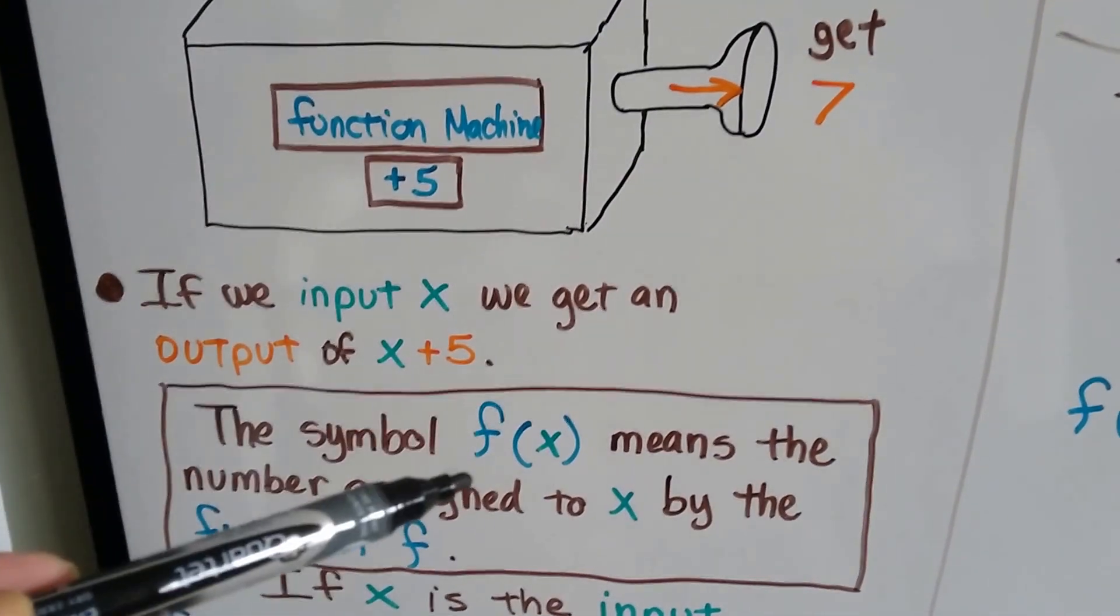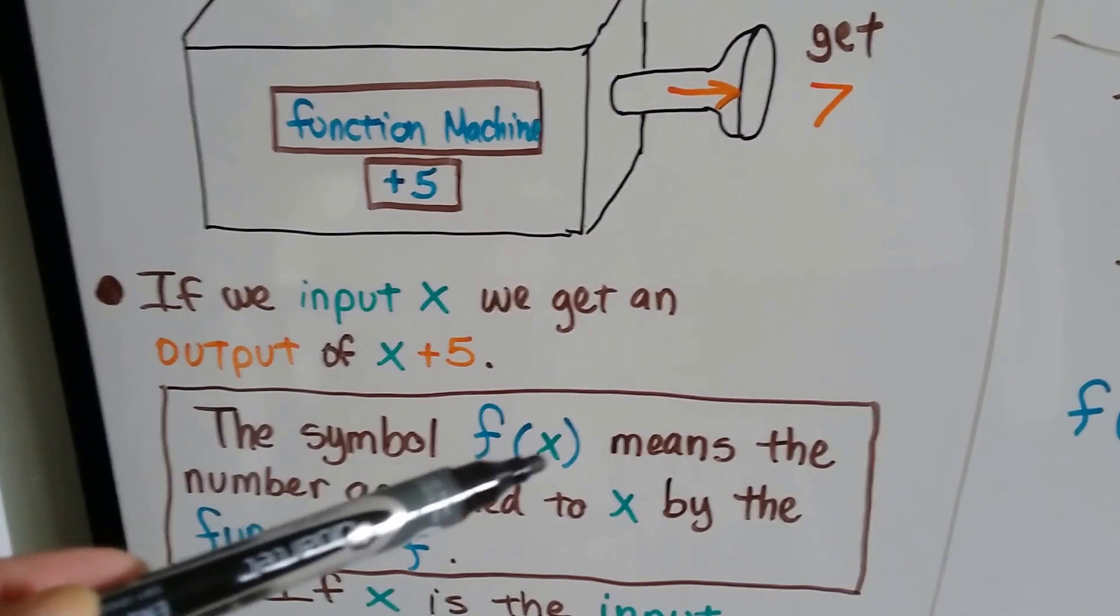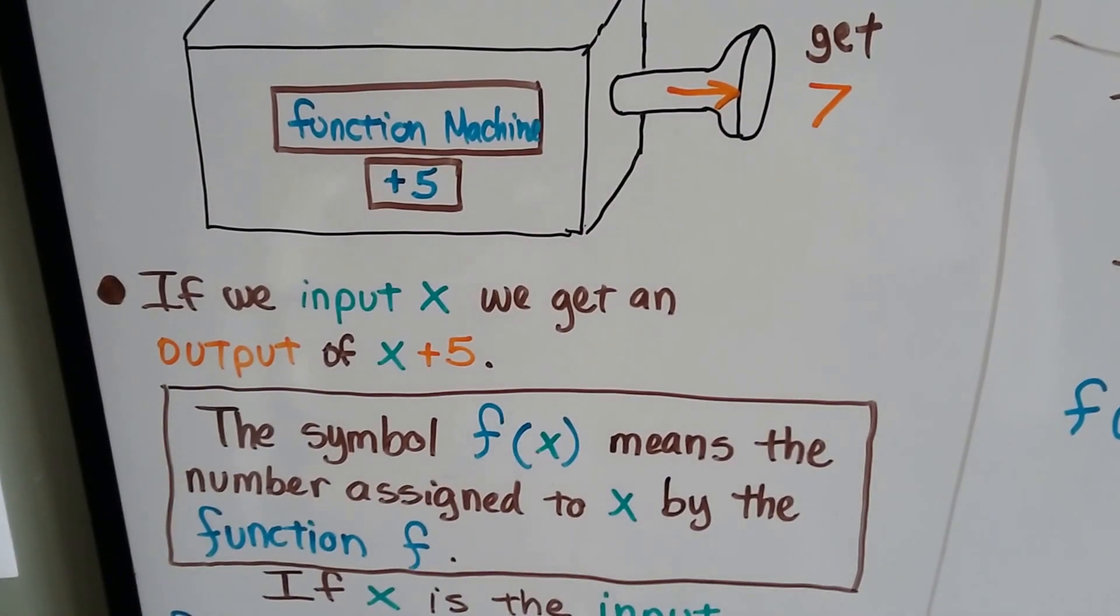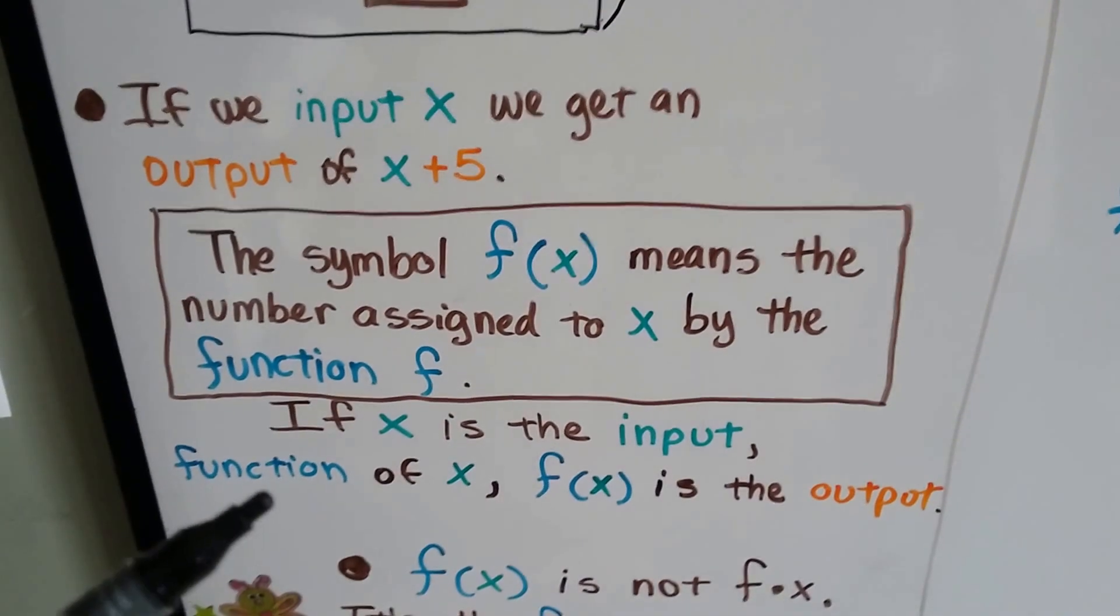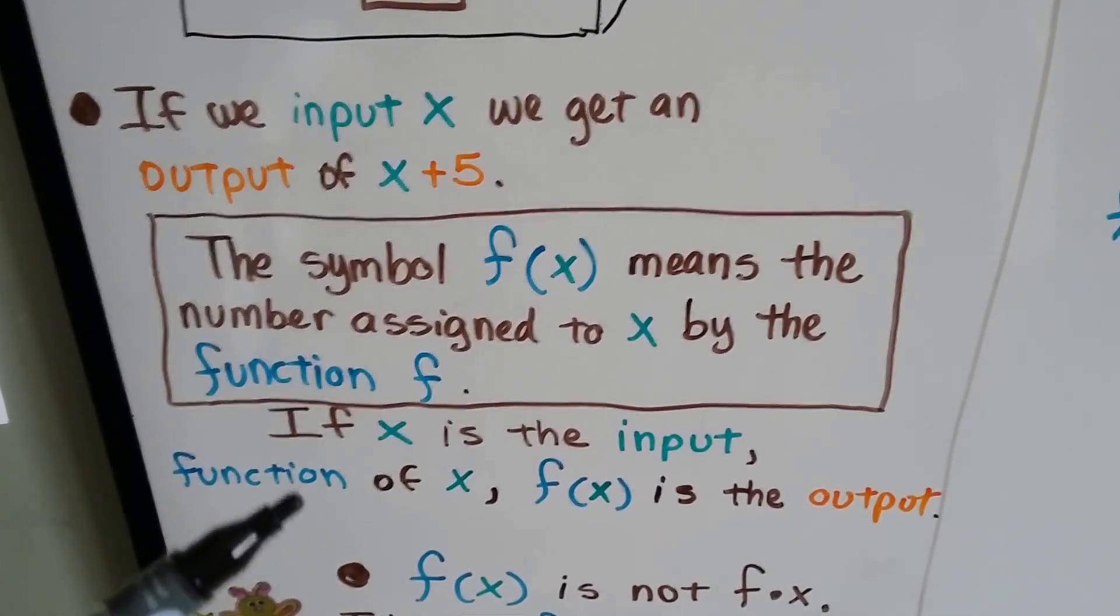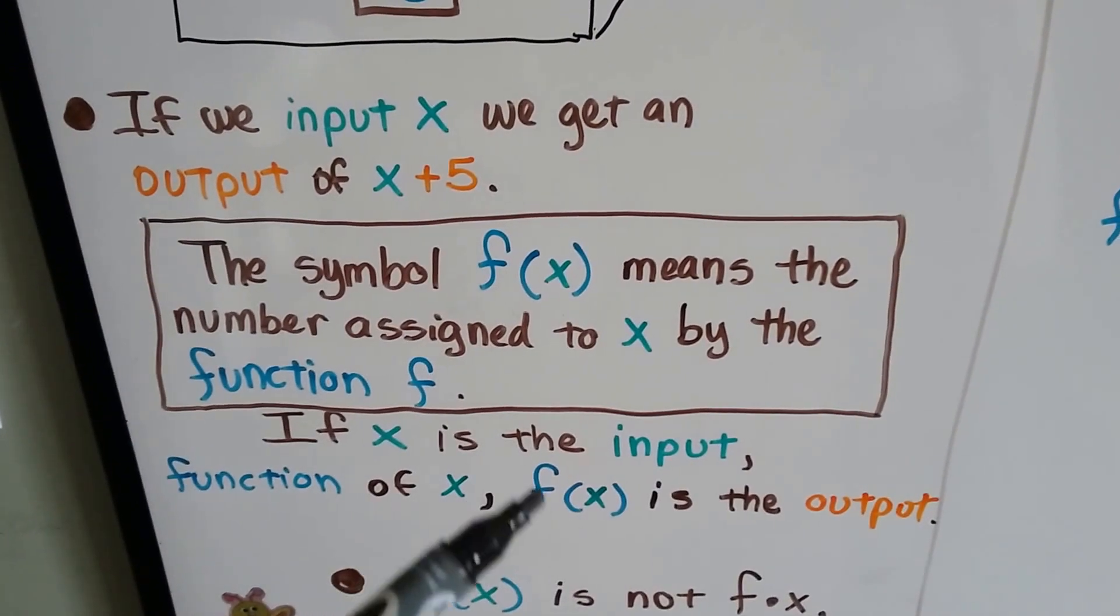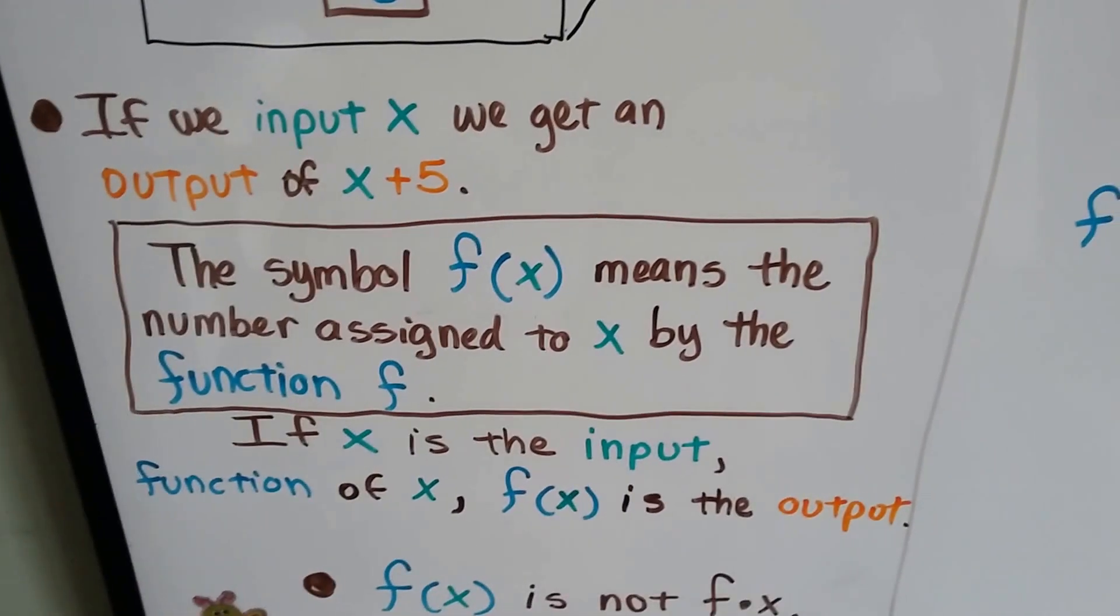When you see a fancy f in front of an x in parentheses, it means the number assigned to x by the function f. And if x is the input, the function of x, that's how we read this, the function of x is the output.